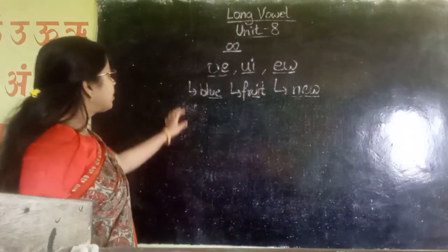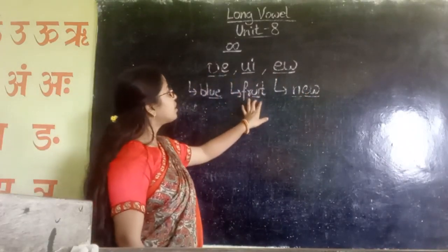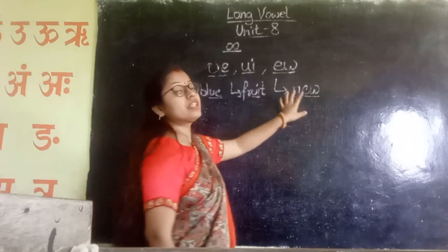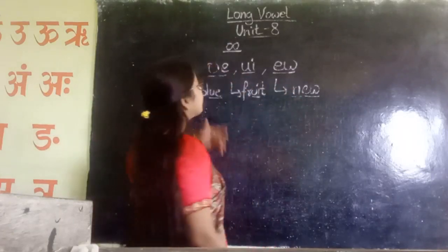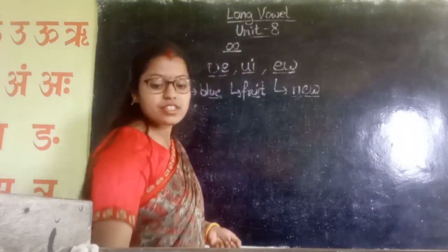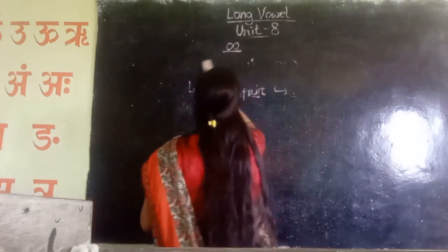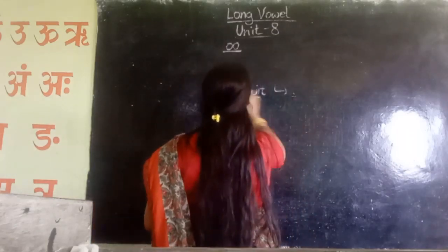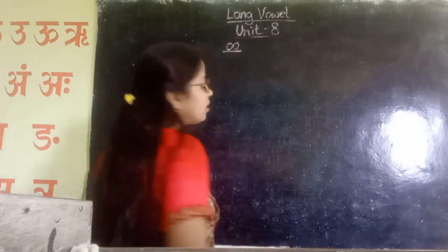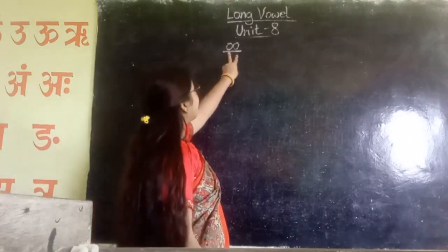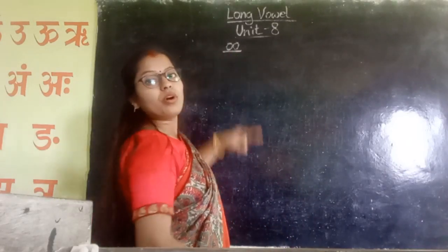Okay. This is OO, this one is OO, this is EW. In this topic, we are talking about the OO sound with double O.